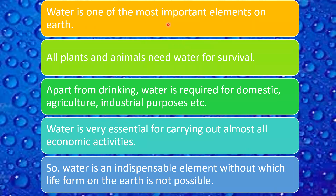Water is one of the most important elements on Earth. All plants and animals need water for survival. Apart from drinking, water is required for domestic, agriculture, and industrial purposes. Water is very essential for carrying out almost all economic activities, making it an indispensable element without which life on Earth is not possible.